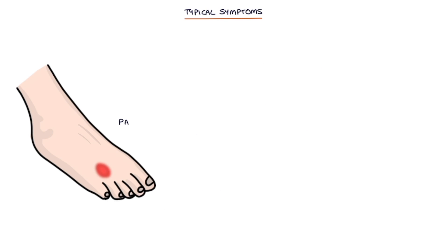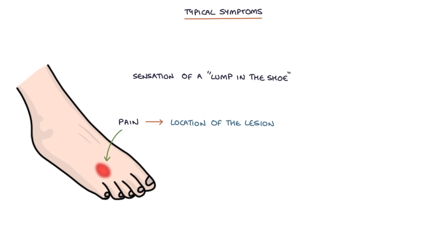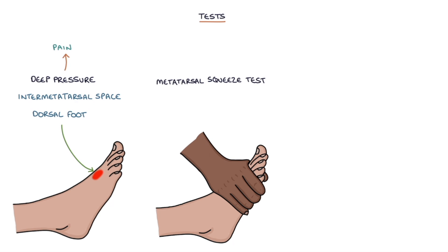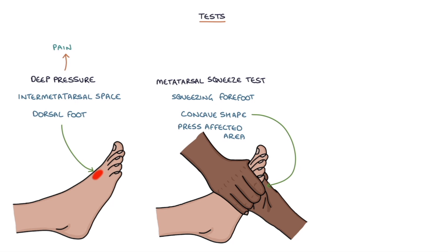Typical symptoms are pain at the front of the foot at the location of the lesion, the sensation of a lump in the shoe, and a burning, numbness, or pins and needles sensation felt in the distal toes. There are several ways to test for Morton's neuroma. Applying deep pressure to the affected inter-metatarsal space on the dorsal foot will cause pain. There's a special test called the metatarsal squeeze test, which involves squeezing the forefoot with one hand to create a concave shape to the plantar aspect of the foot, then using the other hand to press the affected area on the plantar side of the foot — this will cause pain in a Morton's neuroma.